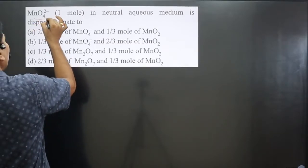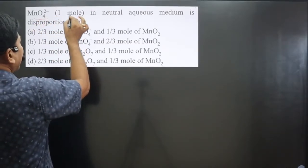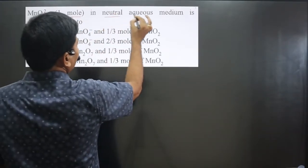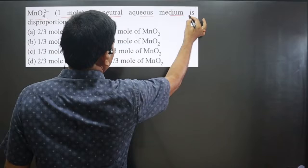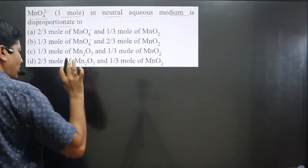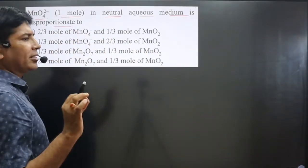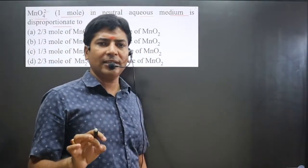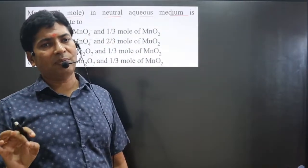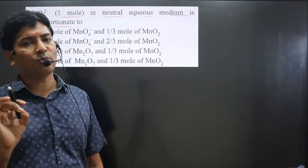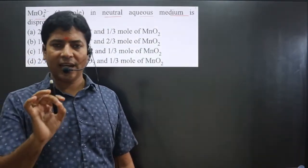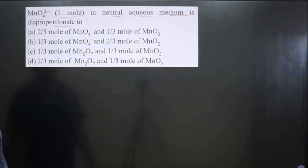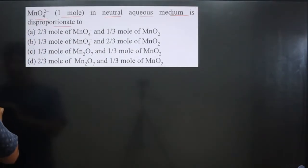The question says: MnO₄²⁻ (manganate ion), one mole is given in a neutral aqueous medium, and it is disproportionated. Always keep in mind: a disproportionation redox reaction is a reaction in which the same molecule or same element will undergo both oxidation as well as reduction reaction. First of all, we write down the chemical reaction.